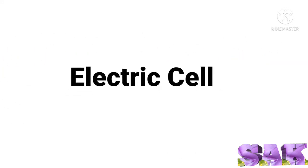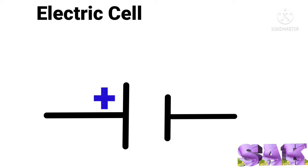Firstly, electric cell. Symbol of electric cell is like this. Part having long vertical line represents positive end. Part having short vertical line represents negative end.